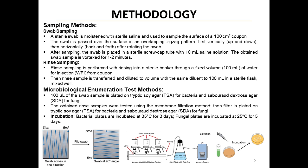Our second method was rinse sampling. Here, we rinsed the coupon with a fixed volume of 100 milliliters of sterile water for injection, collecting the rinse in a sterile beaker. This method is particularly useful for sampling irregular surfaces or larger areas. After sampling, we processed our samples for microbiological enumeration. For swab samples, we vortexed the swab in saline solution; for rinse samples, we used membrane filtration. We then plated our samples on tryptic soy agar for bacteria and Sabouraud dextrose agar for fungi. Bacterial plates were incubated at 35°C for 3 days, while fungal plates were incubated at 25°C for 5 days.